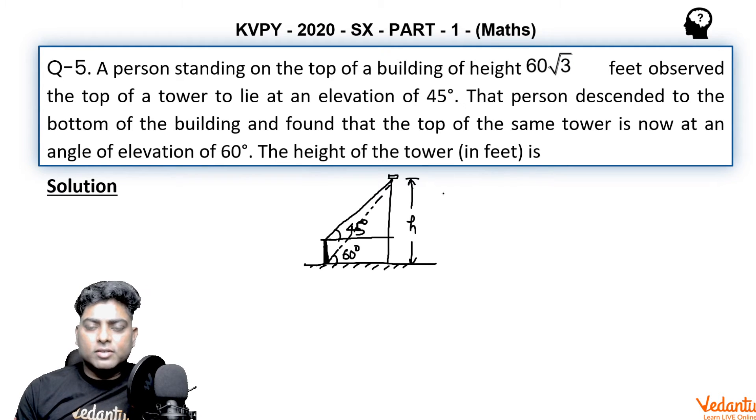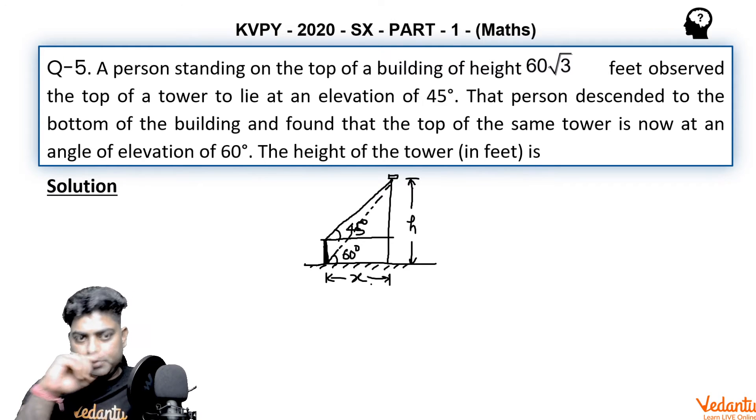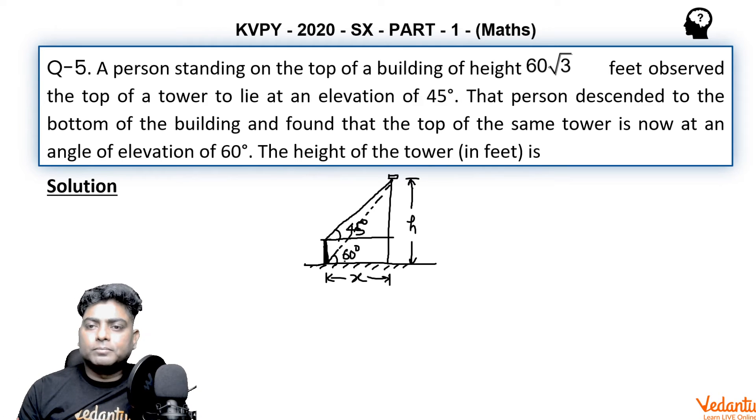What is the height of the tower if we have to find h? Let us assume the distance between the tower and the building is x. So we can easily prepare some relation here. If you write h from here, you will write in terms of x from the 45 degree angle: it is x tan 45.